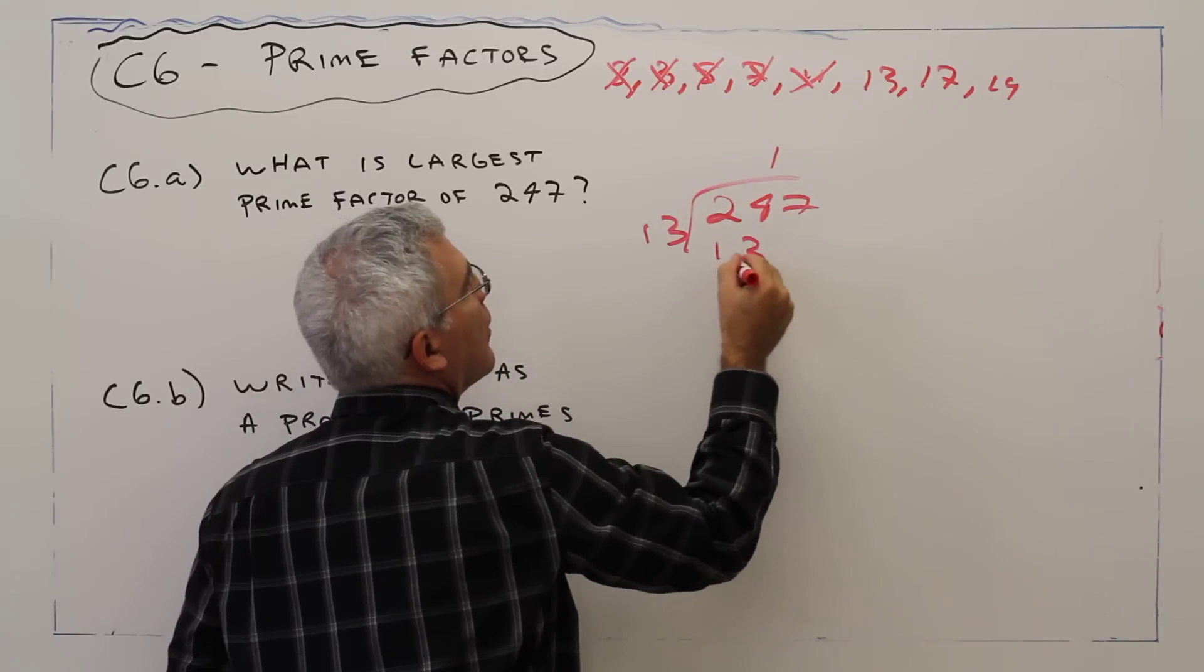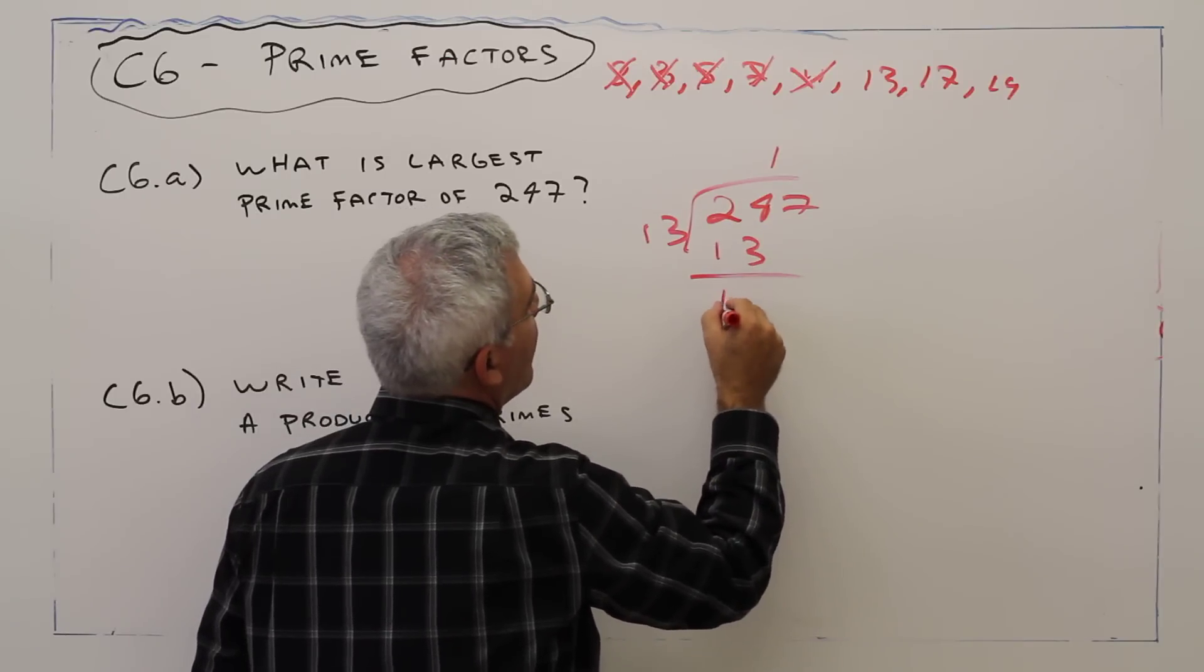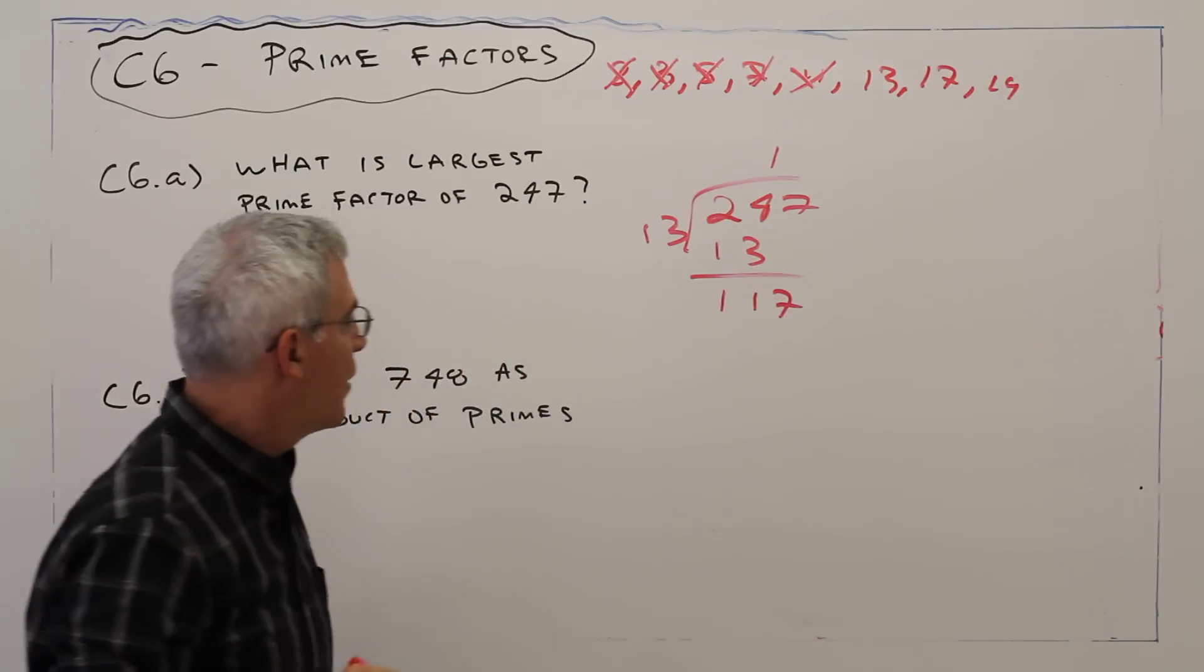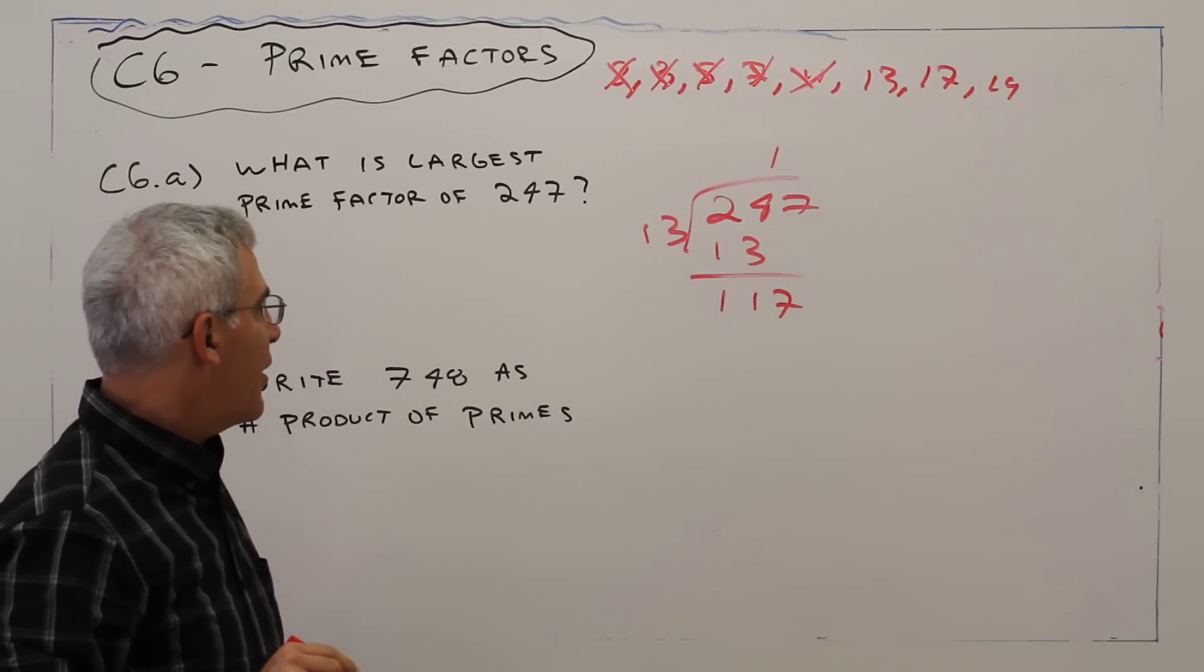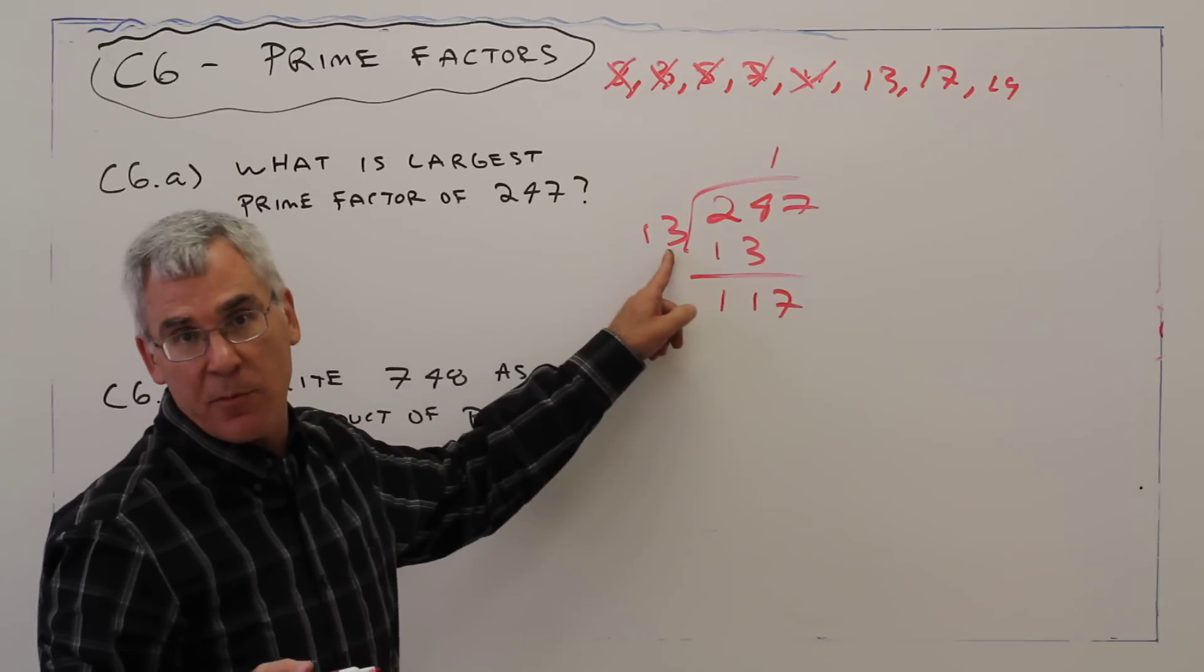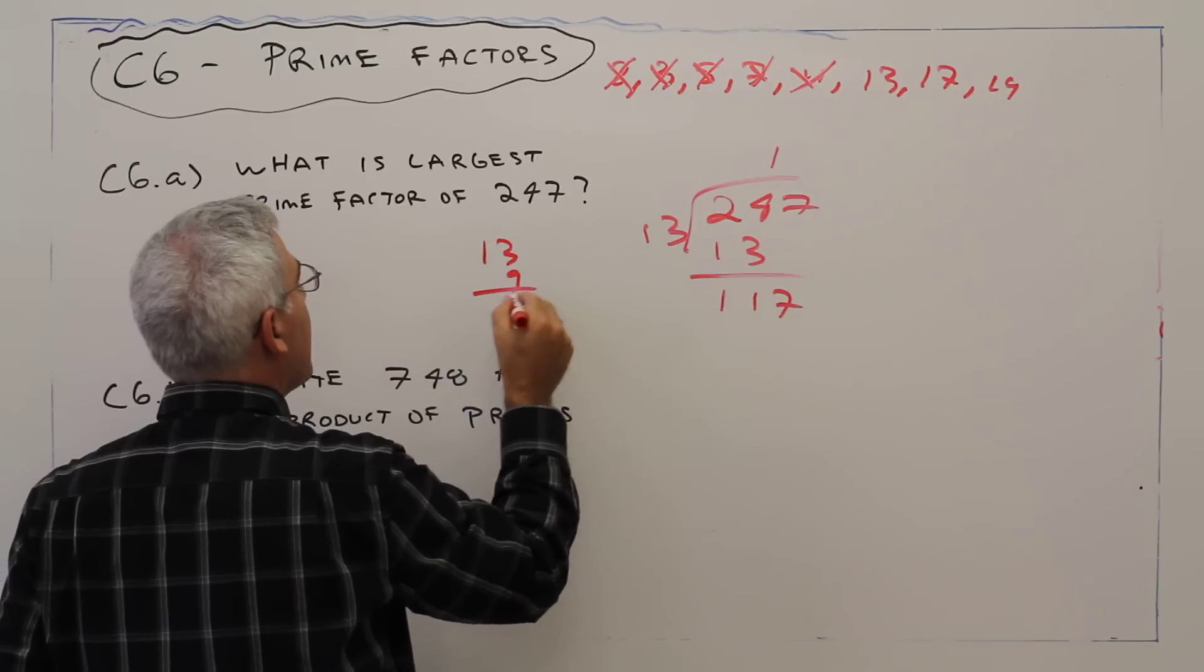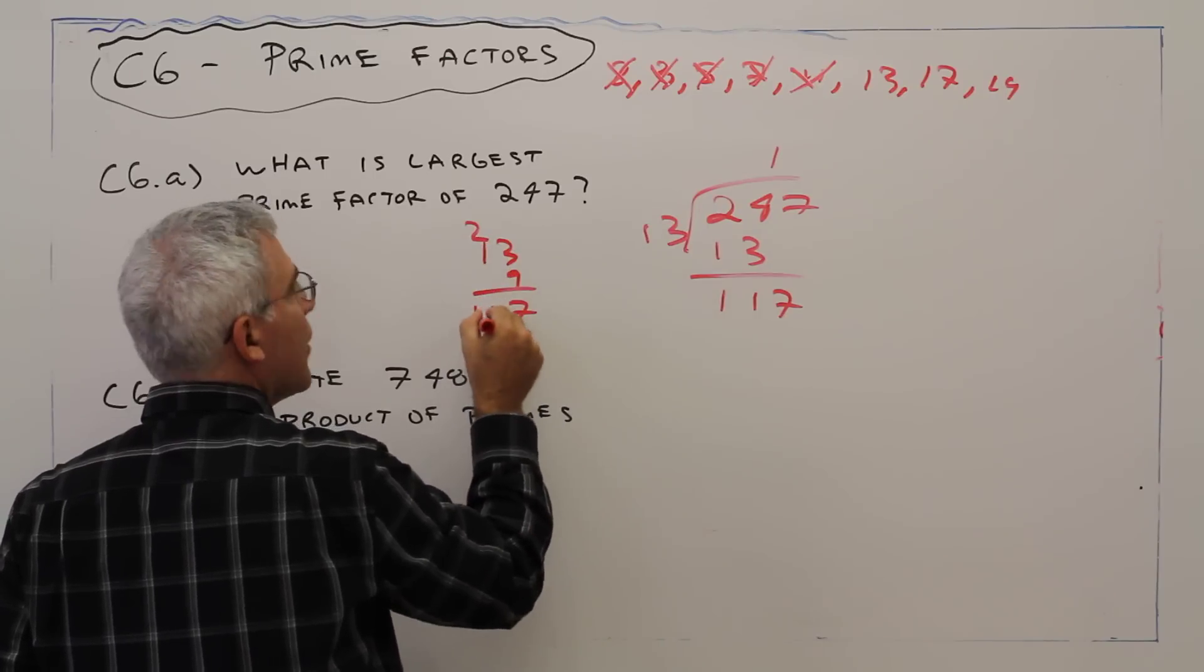1, 13, what do we have? 117. How many times? Let's try, I guess we'll try 9 because 9 times 3 is 27, last digit, another video. So 13 times 9, 2, yep.